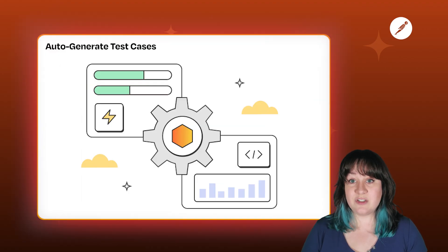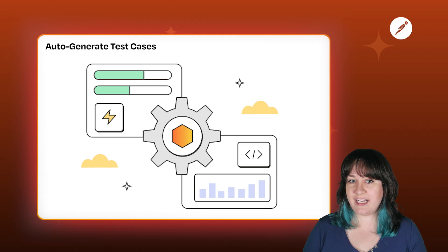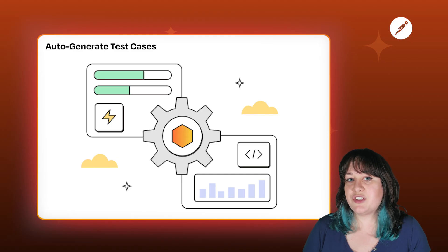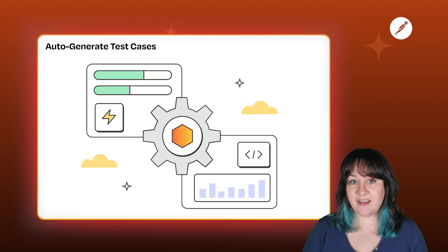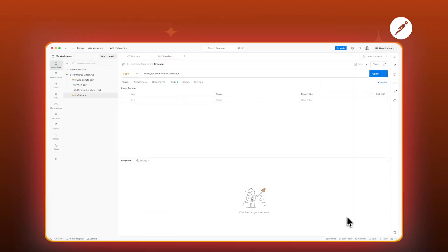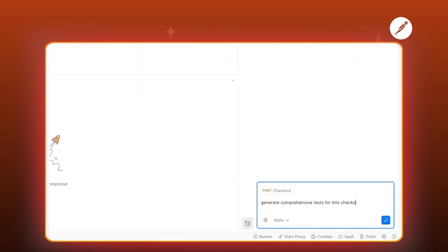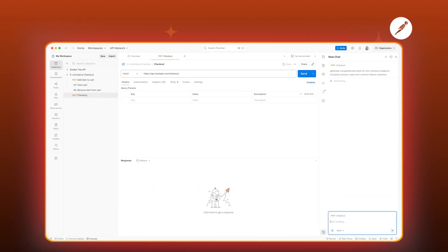Let me show you what I mean. Let's say I'm testing an e-commerce checkout API. I'd probably spend about 30 minutes writing tests for successful orders, failed payments, bad product IDs, and making sure things like auth and response data are behaving correctly. But watch this instead — I'm going to open Agent Mode in Postman, and I'm just going to type in plain language: generate comprehensive tests for this checkout endpoint, including success cases and common failure scenarios.